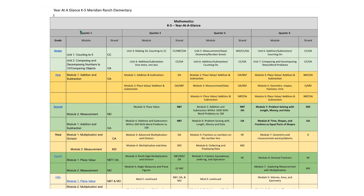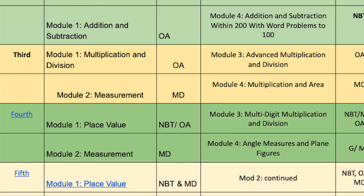Teams have started to develop yearly at a glance, or YAGs, for each content area and grade level to organize our scope and sequence of the curriculum. This ensures a guaranteed and viable curriculum is used K-12 in our zone and that students master the essential power standards as they progress through the continuum of learning.